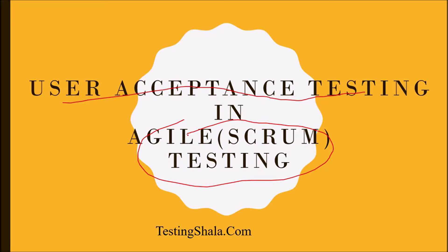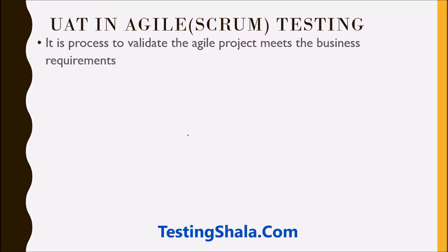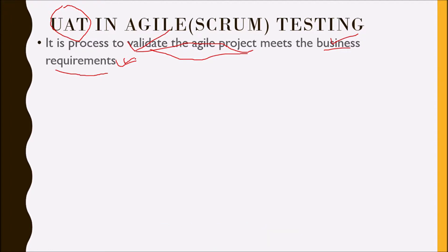So what is user acceptance testing in the Agile testing model? User acceptance testing is a validation in the Agile project that meets the business requirements — that is the main definition of UAT. It is a process to validate the Agile project against business requirements, just to see whether whatever has been defined as requirements has really been implemented or not. That is called UAT in Agile or Scrum testing.